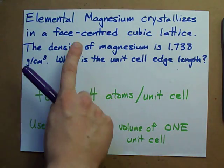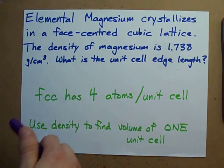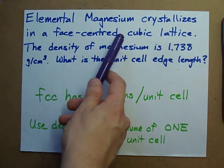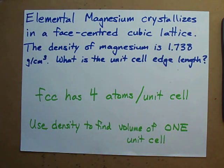One thing you're going to need to know to do this kind of question is how many atoms there are in the unit cell. A face-centered cubic lattice has four atoms in its unit cell. The trick is to use the density to find the volume of a single unit cell.